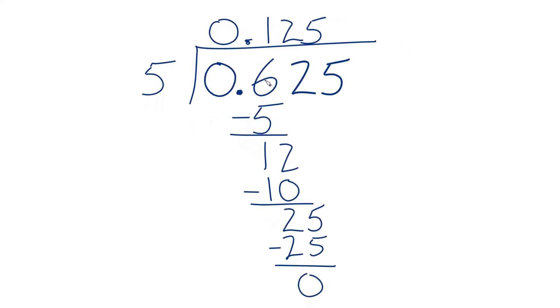So 0.625 divided by 5 is 0.125. If you want to change this to a fraction, there's a link in the video on how to do that. 0.125, that is one-eighth as a fraction. So that's why this is a kind of common number.